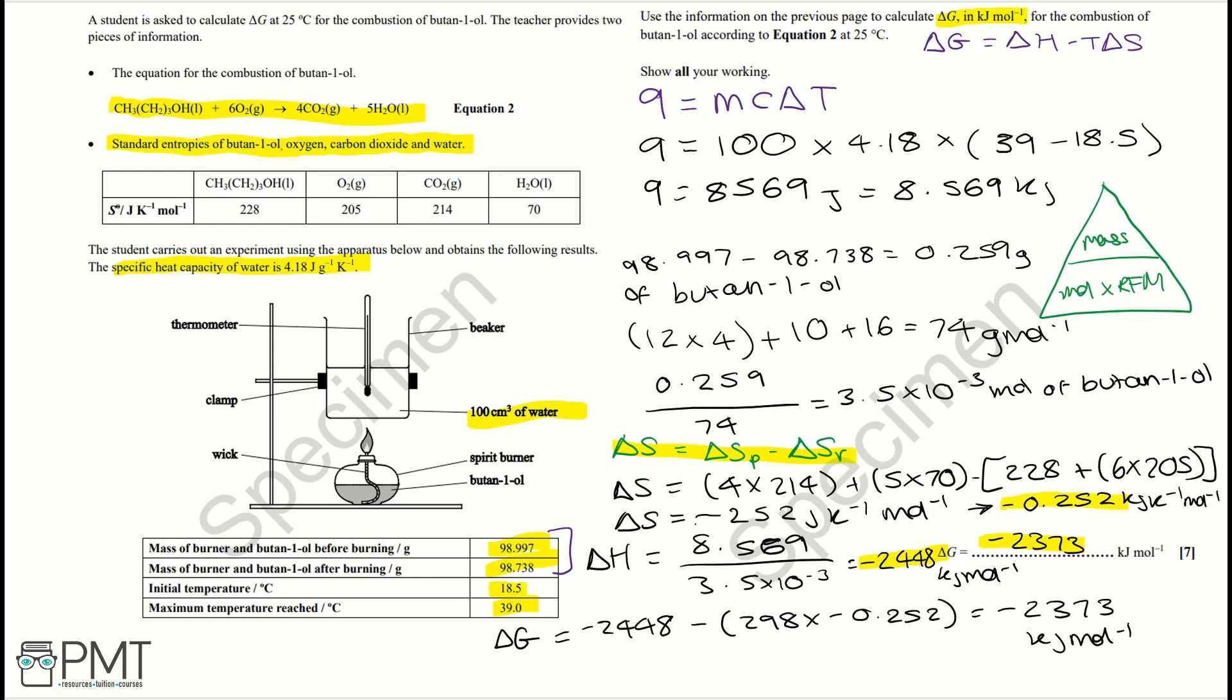You get a mark for working out your Gibbs free energy or your delta G. The first mark comes from just stating the equation and plugging the numbers in. Then your second mark comes from your correct typing in of the calculator and getting minus 2373 kilojoules per mole.